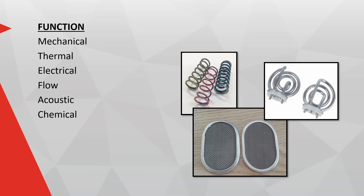It is typical for components to have a similar form and fit but a completely different function. Examples include springs with different stiffnesses, boiler elements with a different power rating, and screen filters that allow a different flow rate.